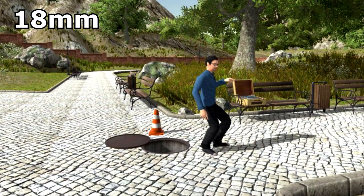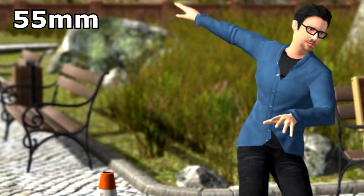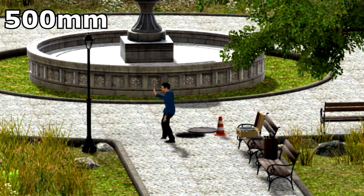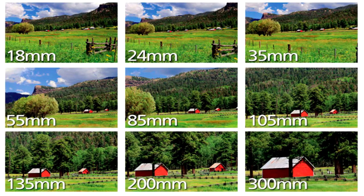One more example: 18mm looks like this; 55mm looks like this. Because 70mm is longer, we've got to move back from the subject to get them in shot. So this is 70mm — we want to zoom in, we go to 500mm. Remember: a small millimetre represents a wider shot, and a higher millimetre number represents a more zoomed in shot.